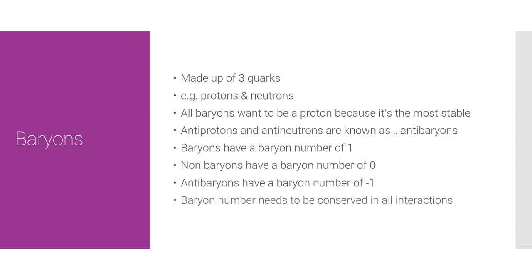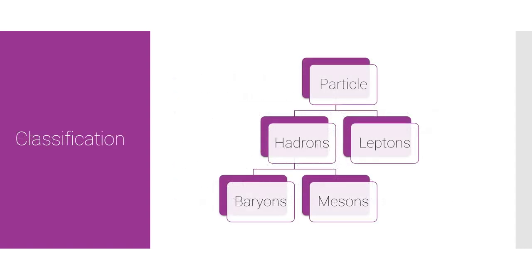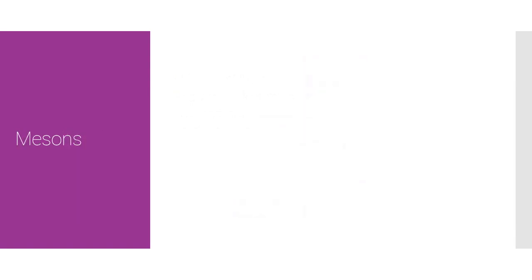Interactions are coming up — I think it's the next video. Let's move on to mesons. The main difference between baryons and mesons is that mesons are only made up of two quarks: a quark and anti-quark pair.